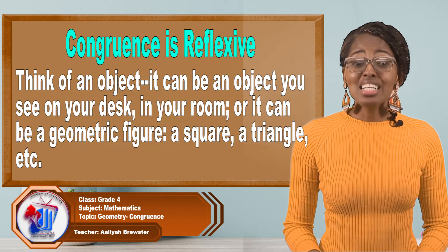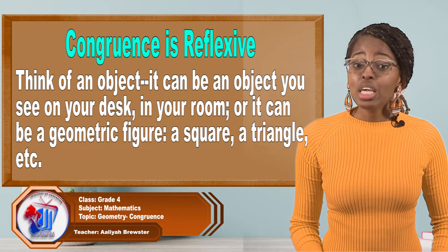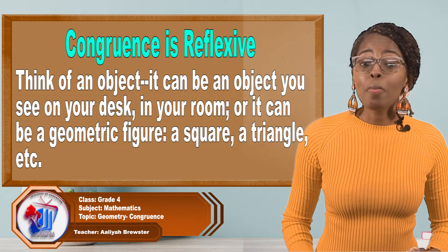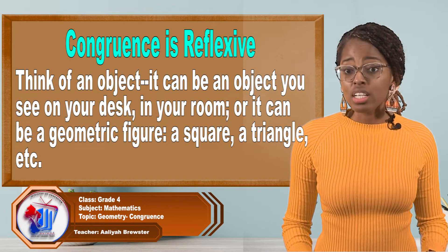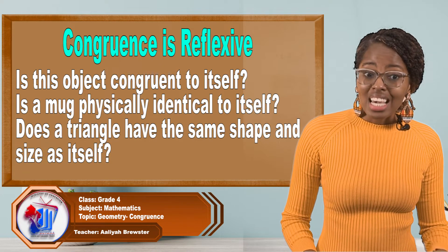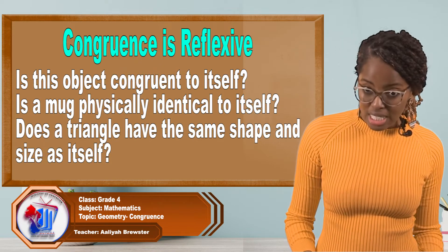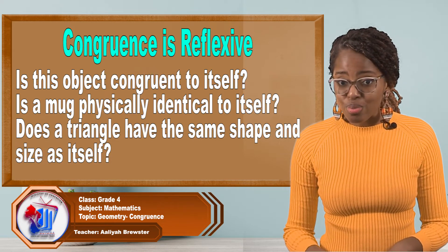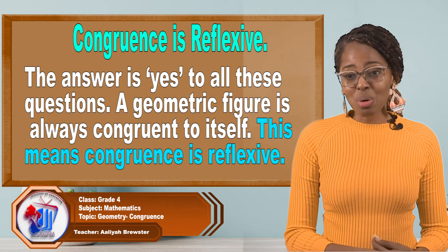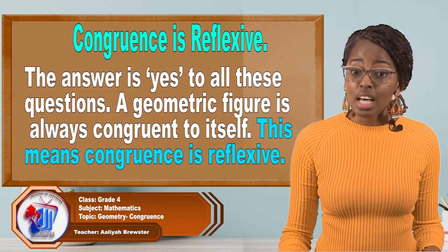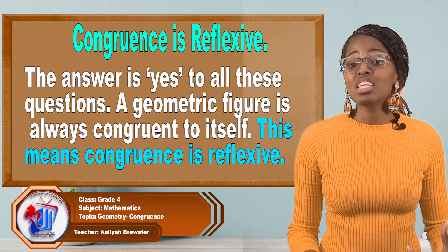First, let's discuss how congruence is reflexive. Think of an object — it can be an object you see on your desk, in your room, or it can be a geometric figure like a square or a triangle. Is this object congruent to itself? Is a mug physically identical to itself? Does a triangle have the same size and shape as itself? The answer is yes to all these questions. A geometric figure is always congruent to itself. This means that congruence is reflexive.